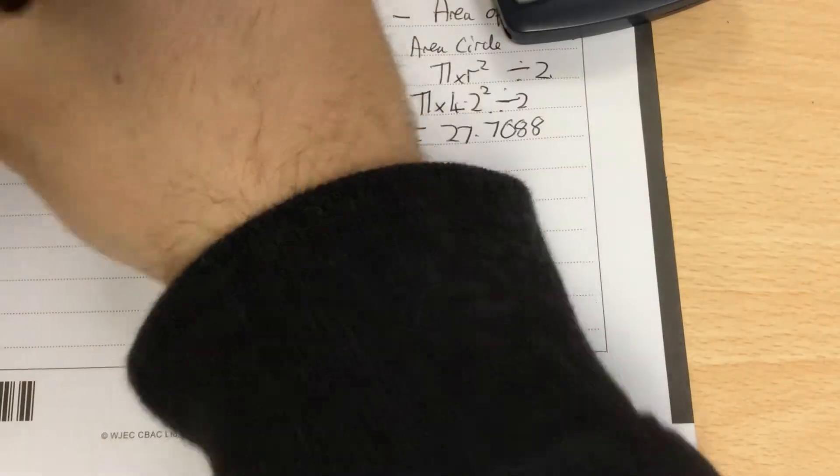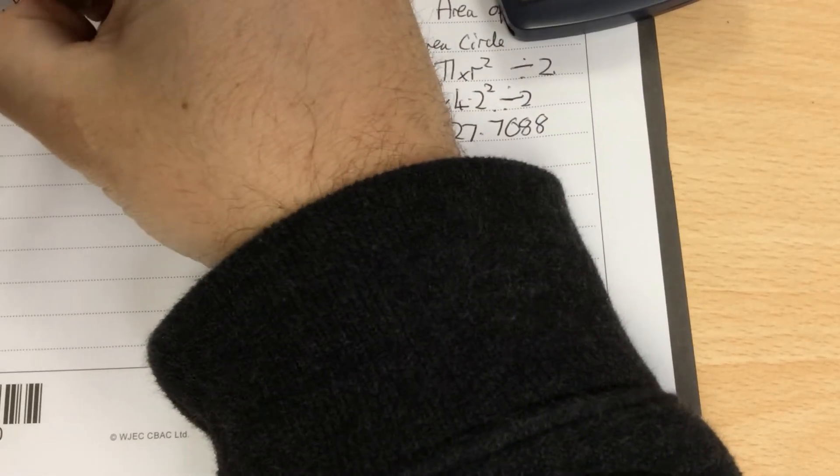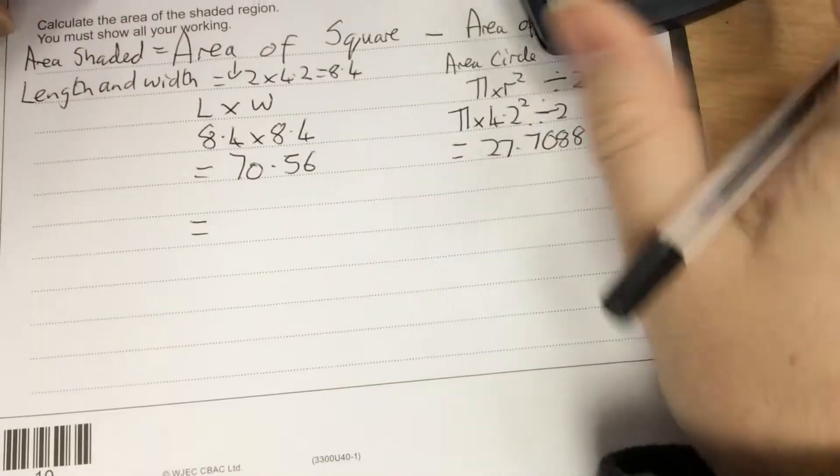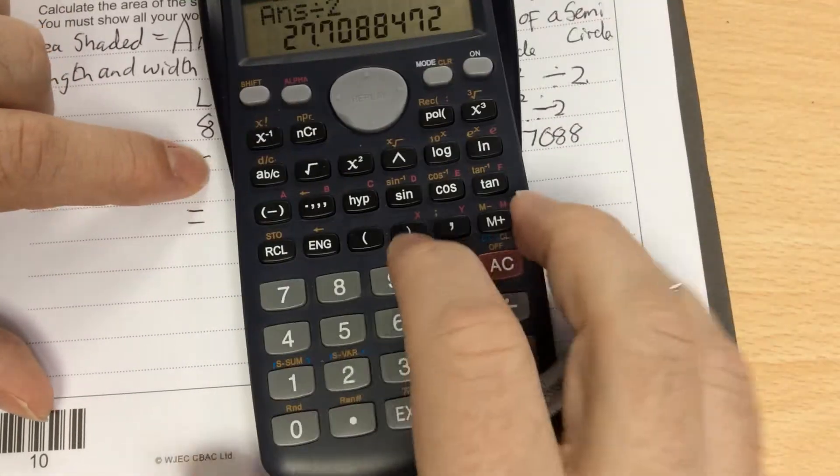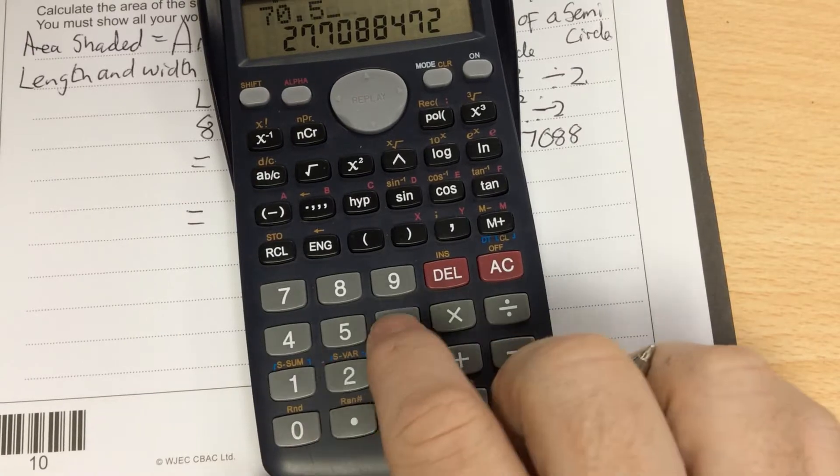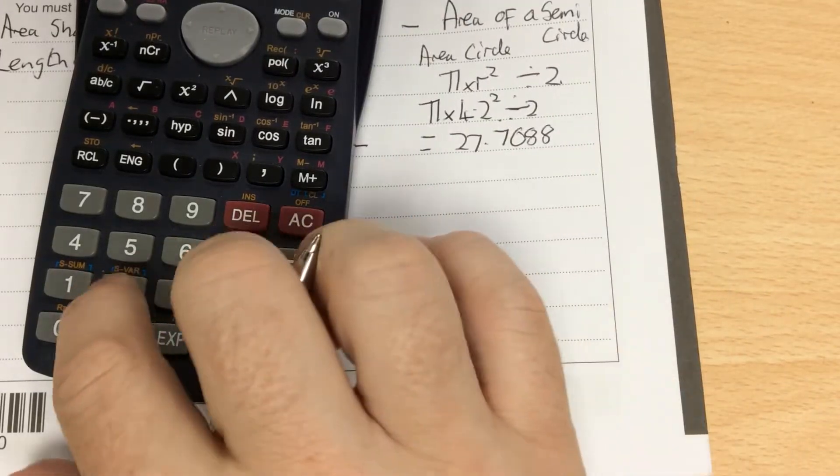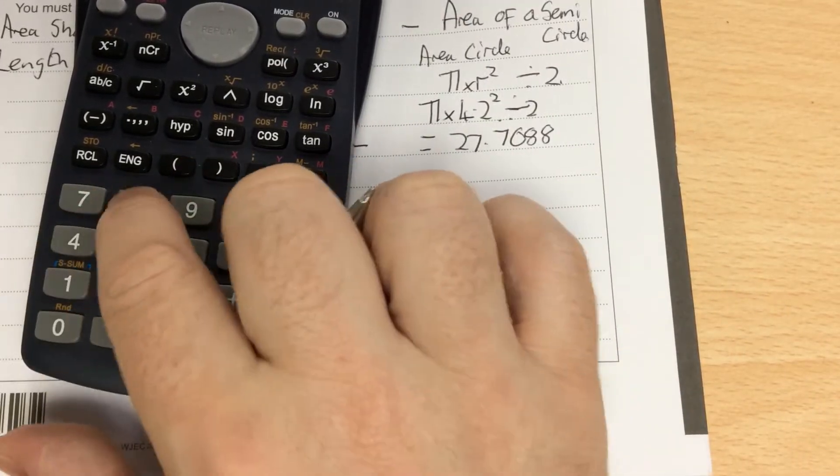So then the area of the shaded region, as we said, is the area of the square, which is 70.56, take away that answer. So we've got 70.56 take away 27.7088.